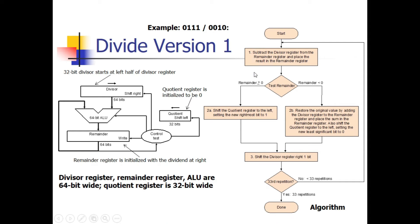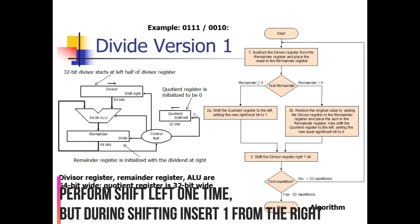In this algorithm we subtract the divisor register from the remainder register and place the result back in the remainder register. After performing this subtraction we do a comparison: if the value in the remainder register is greater than 0, it means the dividend is greater than the divisor. In that case, we shift the quotient register left once and set the least significant bit of the quotient to 1.